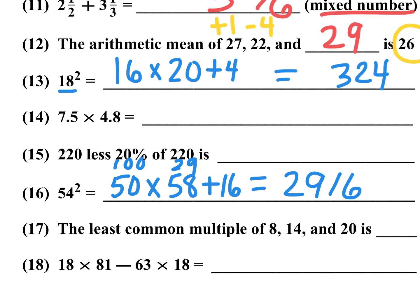Number 14: 7.5 times 4.8. Think of it as 0.75 times 48 — multiply 48 by 10 and divide 7.5 by 10, shifting the decimal. Now compute three-fourths of 48: 4 goes into 48 twelve times, and 12 times 3 is 36. So 7.5 times 4.8 equals exactly 36.